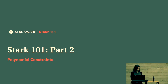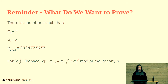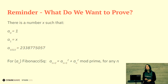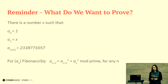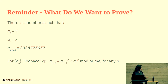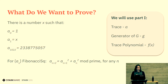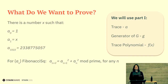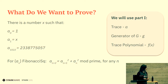So a short reminder. We are proving the following statement: that there is a number x such that if we compute the Fibonacci square sequence starting with 1 and x, modulo our prime, the last element is this element here. And in this part, we are going to use the trace, the generator of g, and F of x, the trace polynomial.